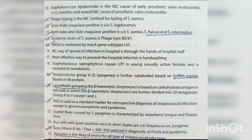Viridans streptococcus is the most common cause of subacute endocarditis and late prosthetic valve endocarditis (>12 months). Staph epidermidis is the most common cause of early prosthetic valve endocarditis (<12 months) and overall most common cause of prosthetic valve endocarditis. Phage typing is the most common method for typing Staph aureus. The epidemic strain of Staph aureus is phage type 80/81. MRSA is mediated by mecA gene, subtypes 1 to 6.